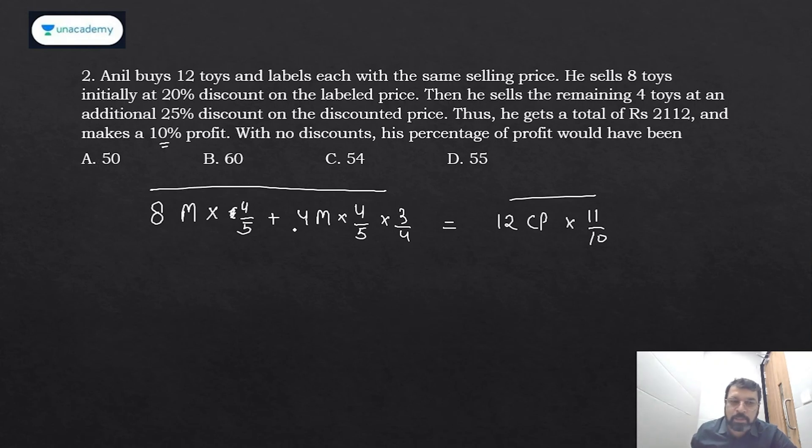So this is your selling price, this is also your selling price. Can I say this equals this? I repeat: M is the mark price, CP is the cost price. For 8 items mark price is 8M, discount is 1/5, so selling price is 4/5. Remaining 4 items mark price 4M, discount of 20% gives 4/5, and further discount of 25% gives 3/4. This should equal total selling price.